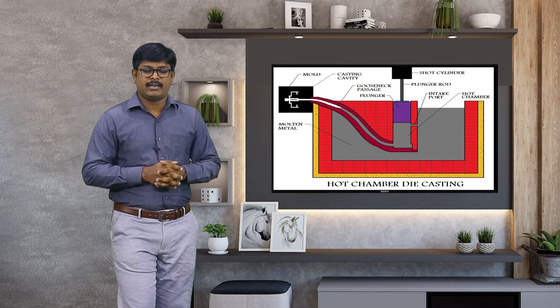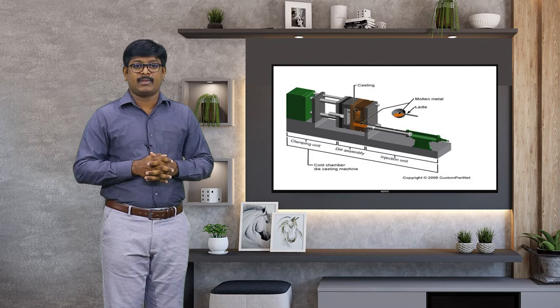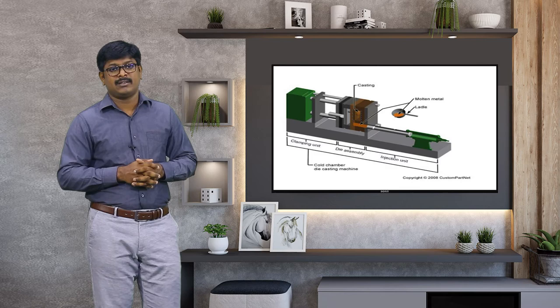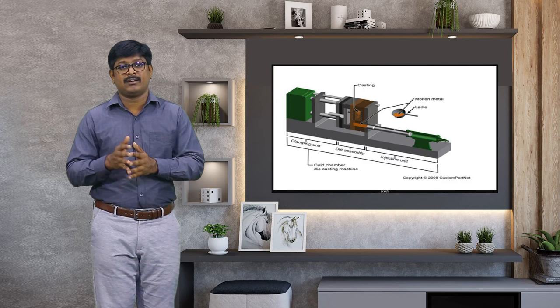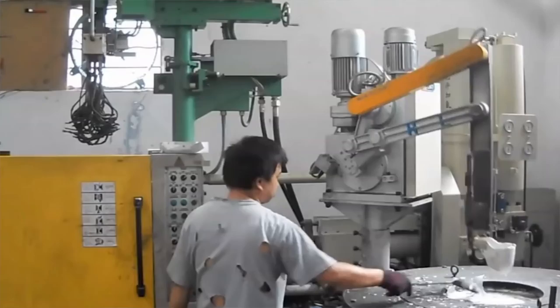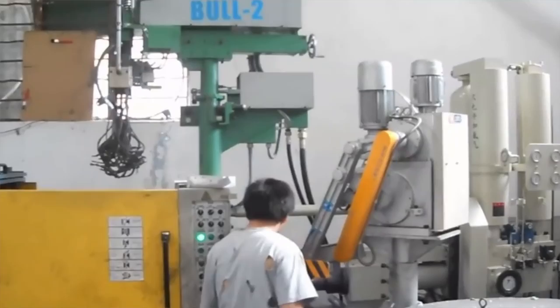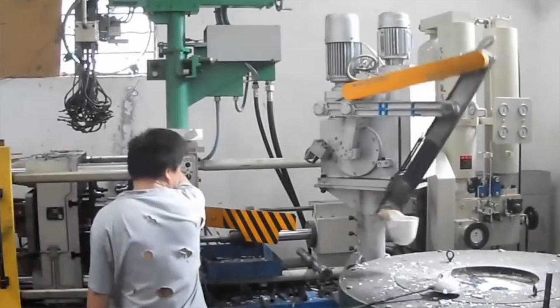When we look at the cold chamber pressure die casting technique, the processes are similar, but the key difference is that in the hot chamber process, we heat the metal either inside or adjacent to the machine. In the cold chamber process, the metal is heated separately — the furnace is kept in a separate location with no link to the machine.